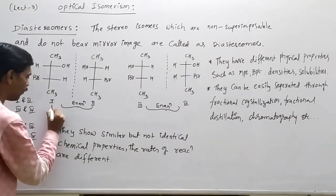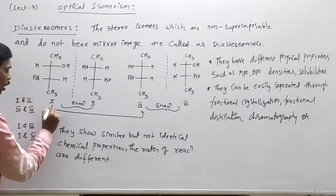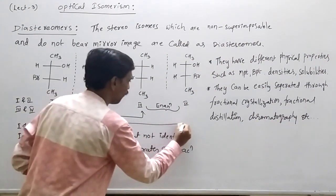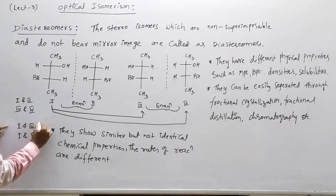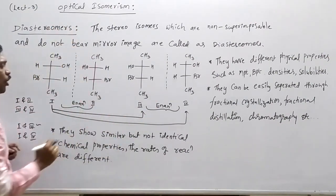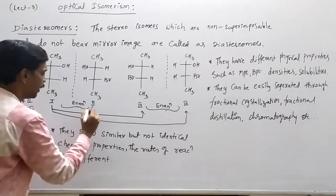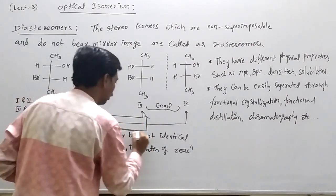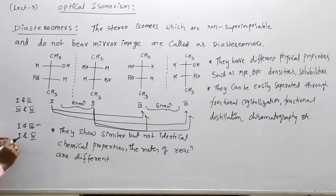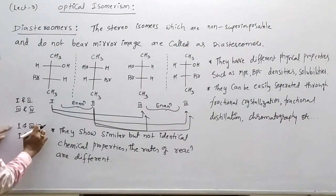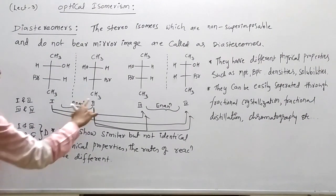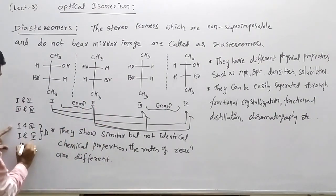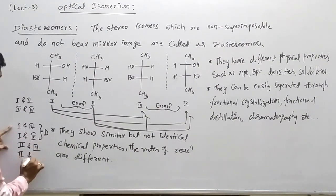We shall identify diastereomers. For 1 and 3 pairs, now it is diastereomeric pair. 2 and 3 and 2 and 4, now 1 and 3, 1 and 4, diastereomeric pair. Now 2 and 3, 2 and 3 and 2 and 4, both are diastereomeric pair.